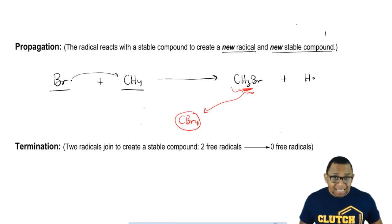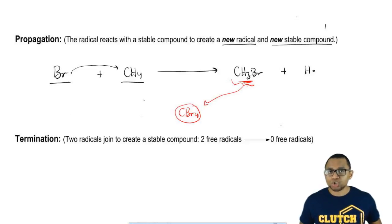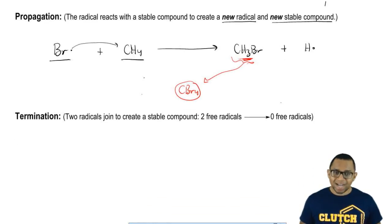Then finally, we have the last step of a radical reaction which is called termination. Termination is the opposite of initiation. In initiation, we have one compound breaking up into two radicals. In termination, we have the opposite. Two radicals combined together to form a new stable compound.